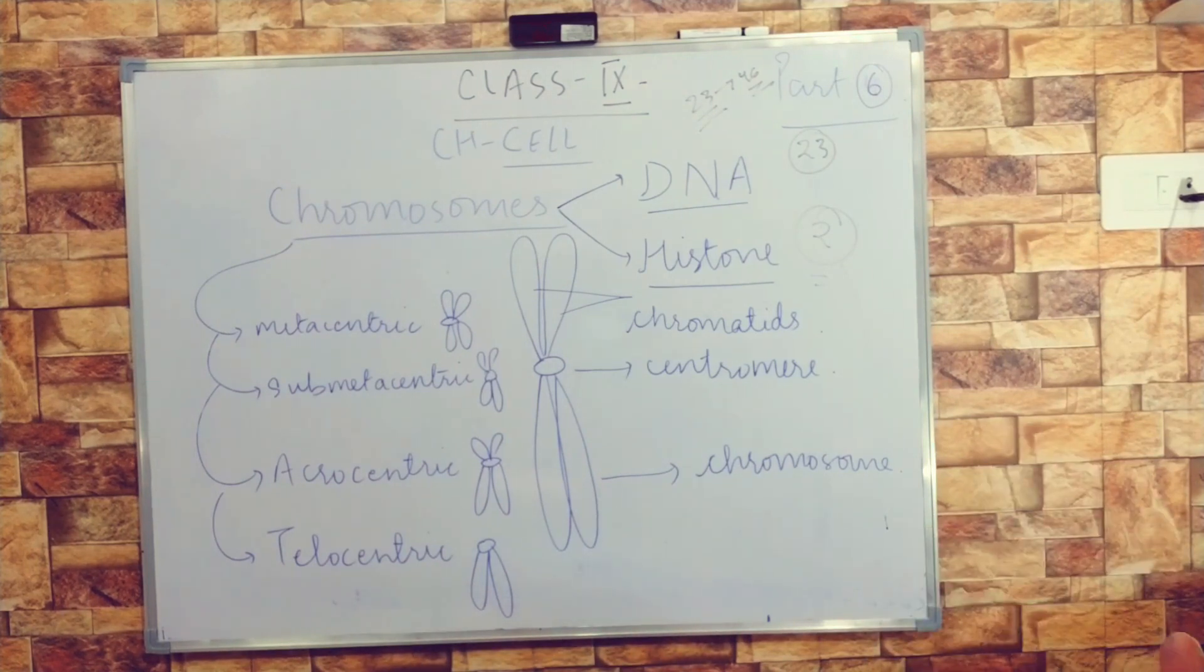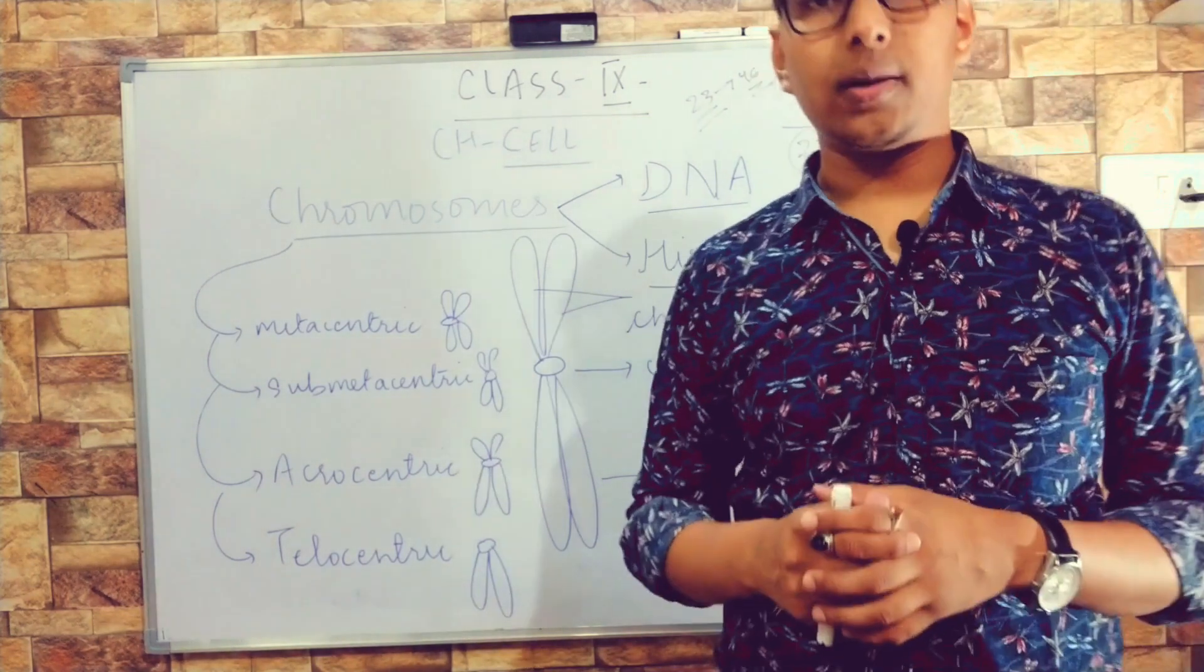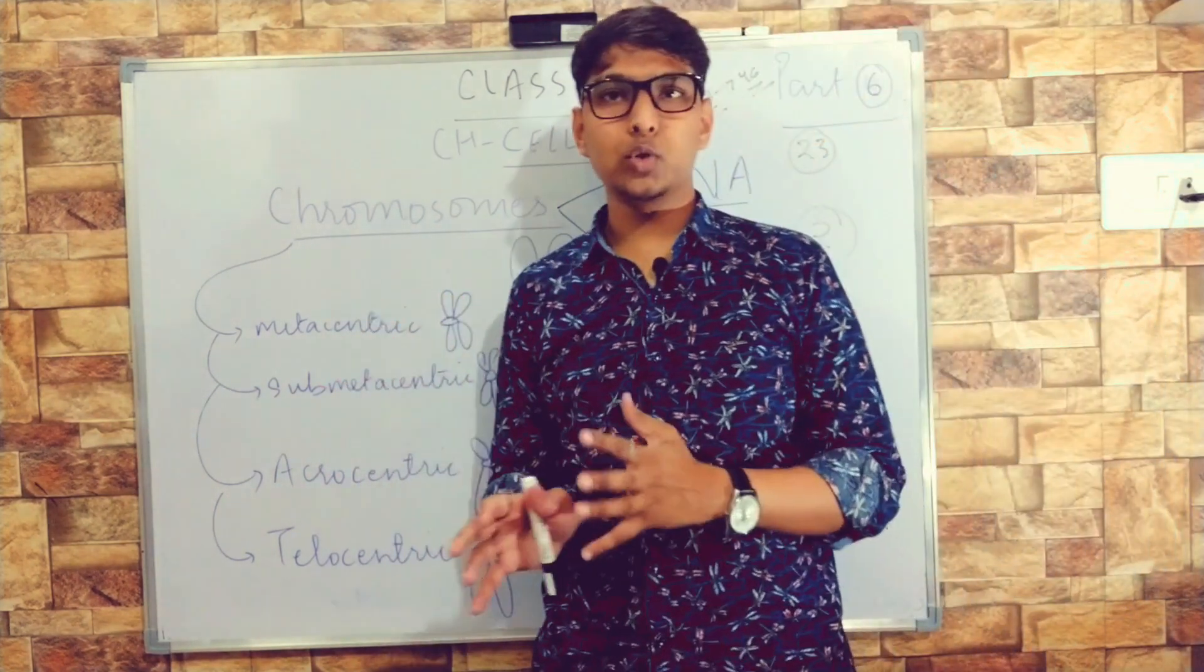A cell which has half the number of chromosomes—that is, one of each kind—is called a haploid cell. The gametes in human beings are haploid. This was all about chromosomes.